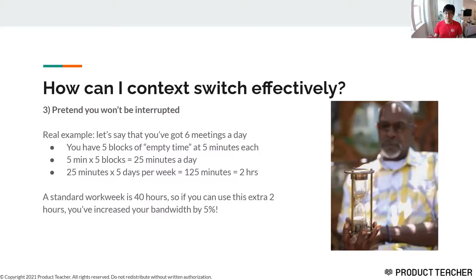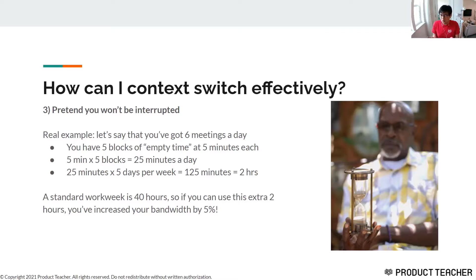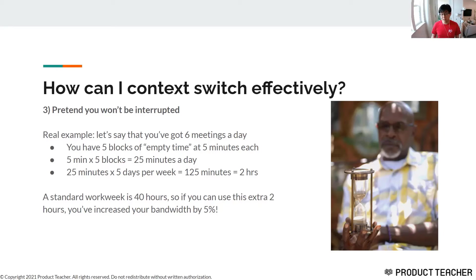As an example, let's say you have six meetings a day — which many product managers do. In between those six meetings, you have empty time of about five minutes each. Five minutes times five blocks is 25 minutes a day, and working five days a week, that's actually two whole hours of work you could be doing. That could increase your bandwidth by five percent, and an extra two hours out of 40 is pretty significant. So pretend you're not going to get interrupted — if you need to, set a timer, and then just go do it.